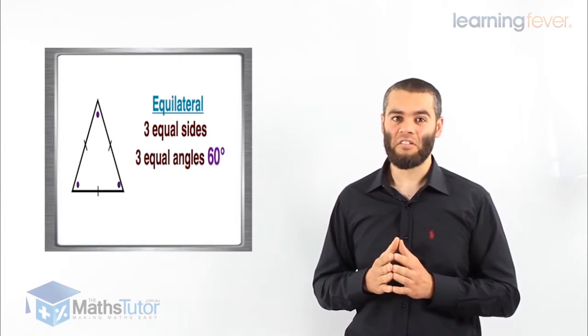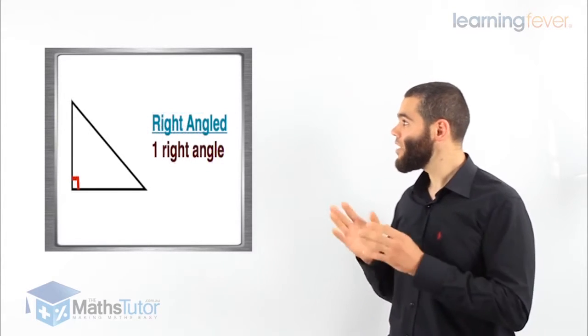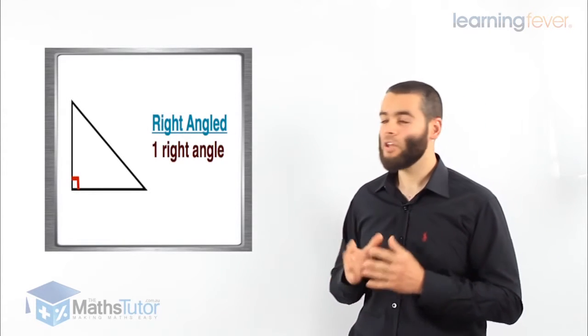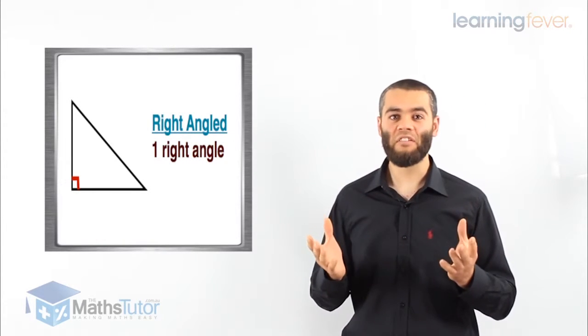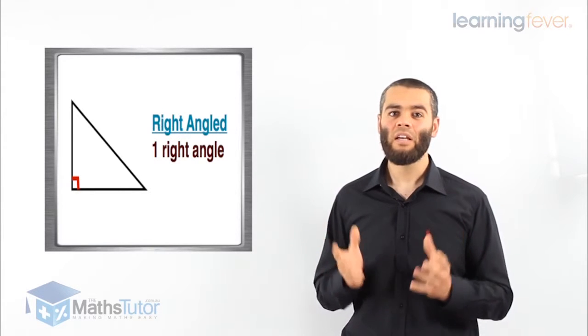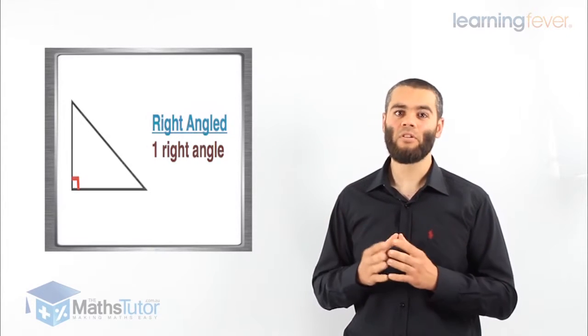Then we have what we know as the right angle triangle. Very easy—a right angle triangle has a right angle of 90 degrees.